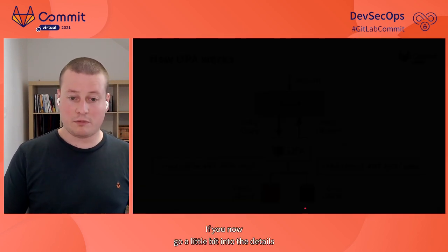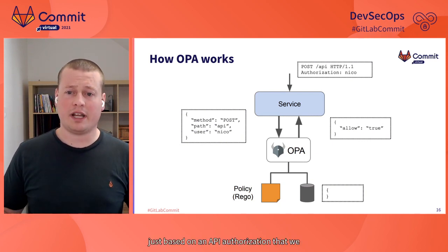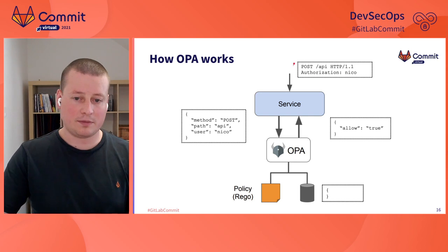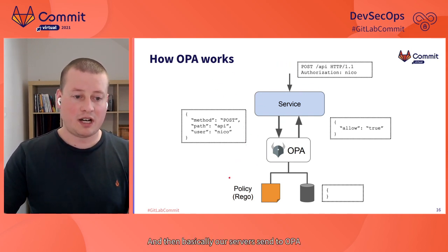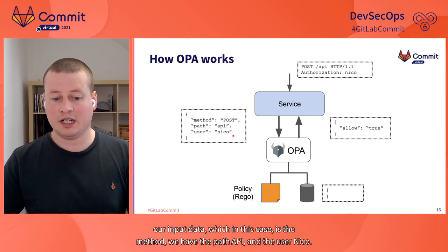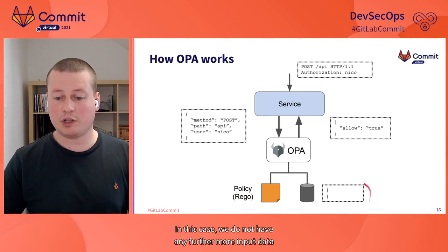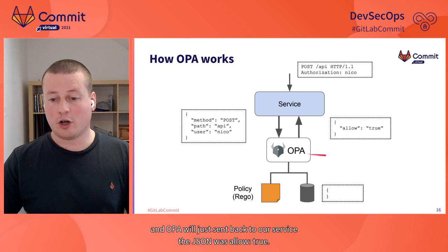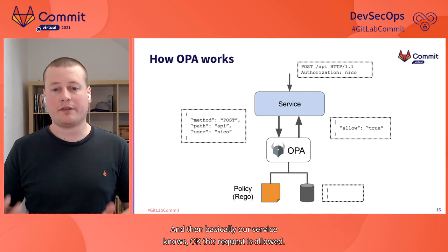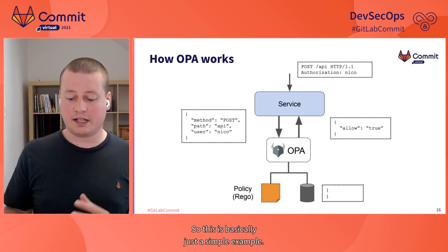A simple example based on API authorization: we have a POST request to /api with an authorization header for user Nico. Our service sends to OPA the input data — method POST, path /api, and user Nico. Based on this, OPA decides whether it's okay. In this case, OPA sends back JSON with 'allowed: true,' and our service knows the request is allowed and can serve the data.